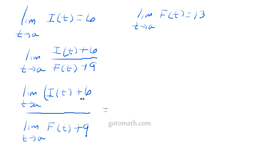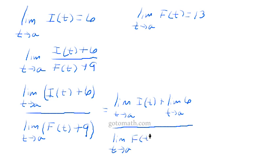We have the limit as t approaches a of I(t) plus the limit as t approaches a of 6 over the limit as t approaches a of F(t) plus the limit as t approaches a of 9.